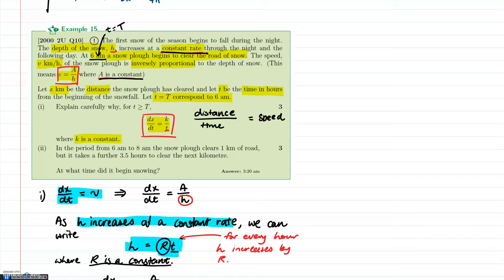This is part two of the 2002 unit paper, question 10. If you haven't seen the first part where we did part i of this question, please find the video for that. Now we're going to look at the second part of this question. In the period from 6am to 8am, the snowplough clears one kilometer of road, and it takes another 3.5 hours to clear the next kilometer. The question asks us to find what time it begins snowing.